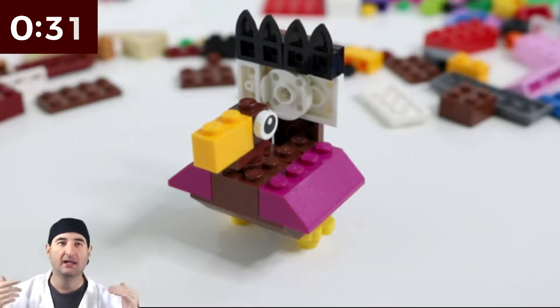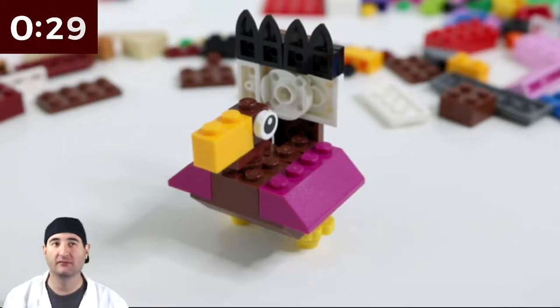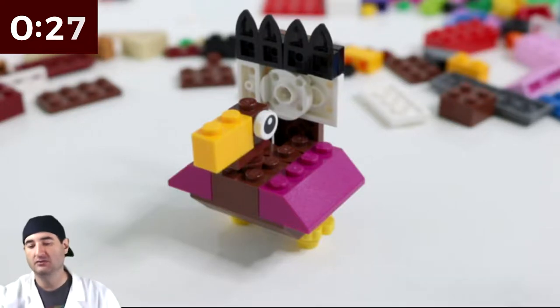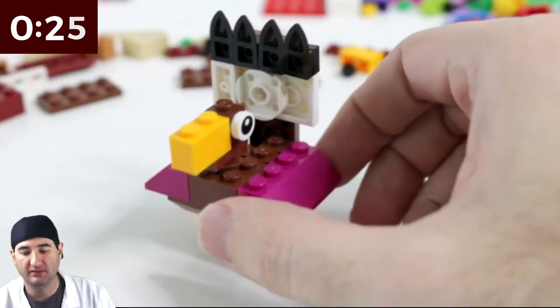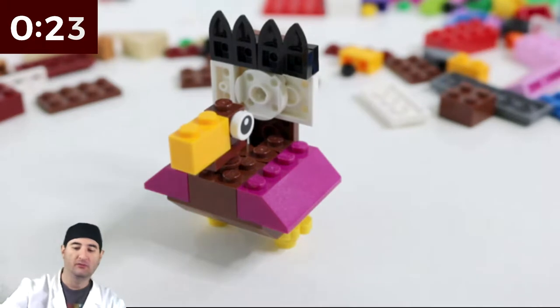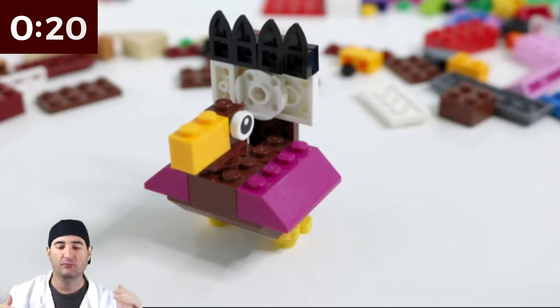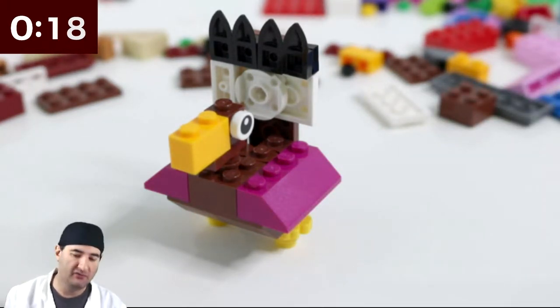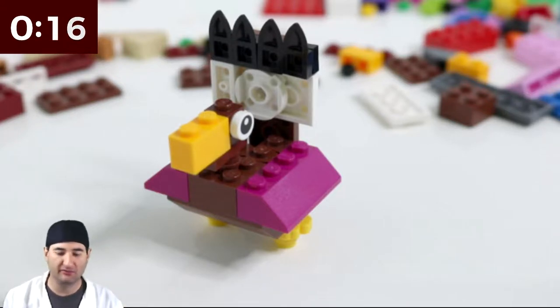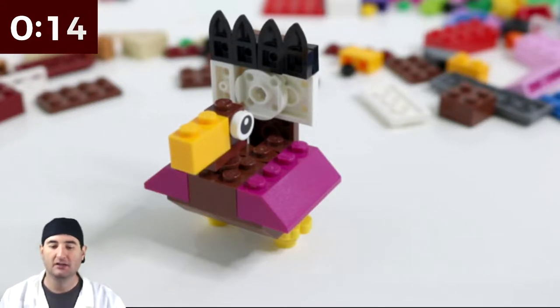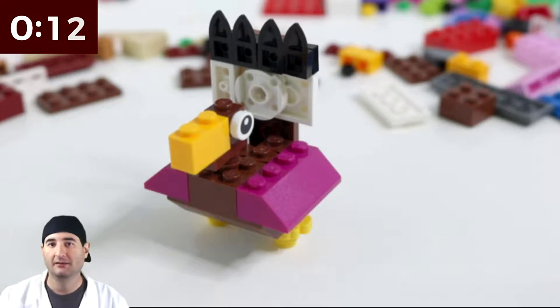220 pieces. It doesn't matter what pieces you have. That's the whole point of this. You could have nothing but purple or mauve or whatever that color is. Go build a turkey. It doesn't matter if you have all the right blocks and all the right colors and all the right anything. Just go build a Lego turkey.